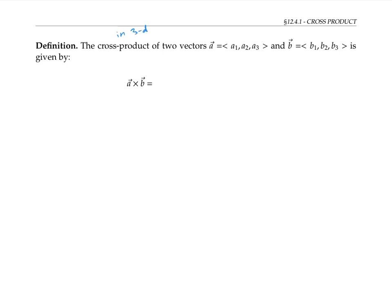If we're given two vectors in terms of their components, we can define the cross product as the determinant of the following expression. We put the vectors i, j, and k at the top, then the components of vector a, and the components of vector b in that order. Then we compute the determinant as we would with any matrix. One way of doing this is by expanding along the top row.